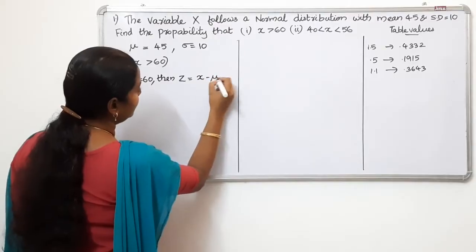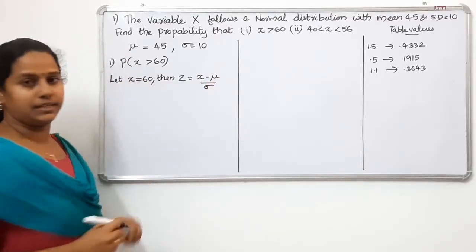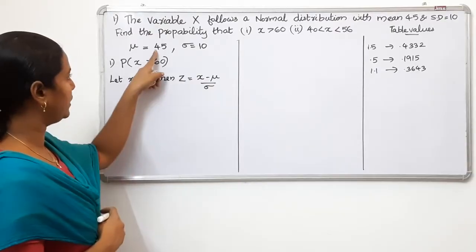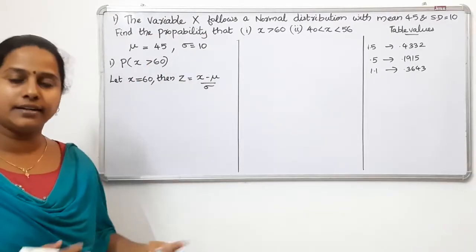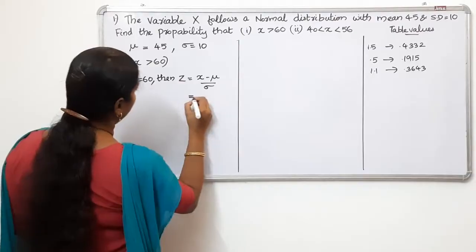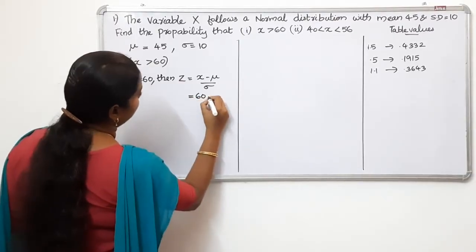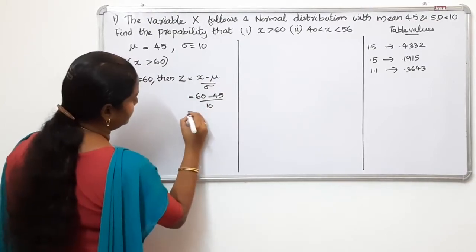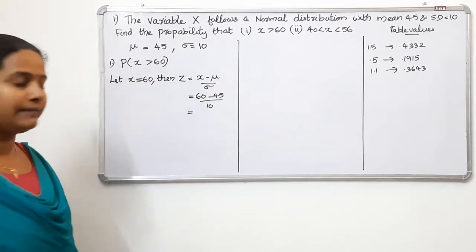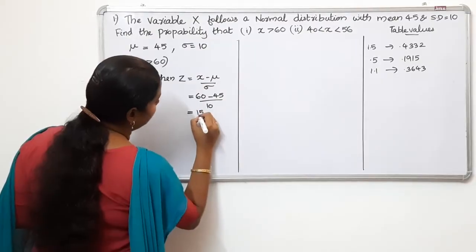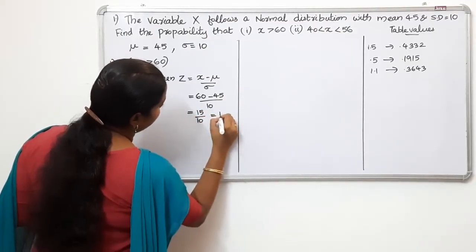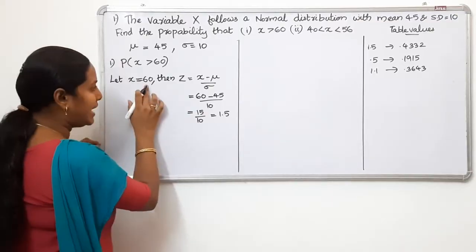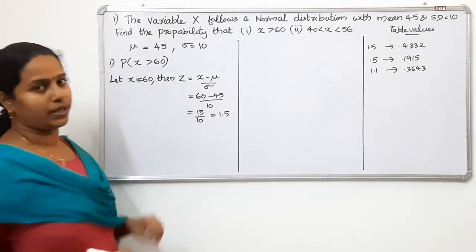For the first question, x minus mu by sigma gives us the Z-score. Here, x is 60, mu is 45, sigma is 10. So we calculate: 60 minus 45 divided by 10. That gives us 15 divided by 10, which equals 1.5. So when x equals 60, Z equals 1.5.